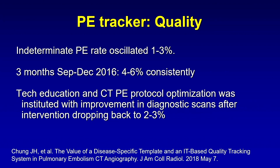Their rate typically oscillated between 1 and 3% every month. However, they noticed in monthly analysis using the PE tracker a consistent uptick in the indeterminate rate to around 4 to 6%, which was about a standard deviation above the mean. Due to this change, they implemented a PowerPoint-based educational program for their CT techs and standardized their CT protocols across their health system, with subsequent improvement in the non-diagnostic rate back to an acceptable 2 to 3%. By using structured reporting, they were able to quickly detect this change and implement an improvement — information that would not have been available with a prose-style report.